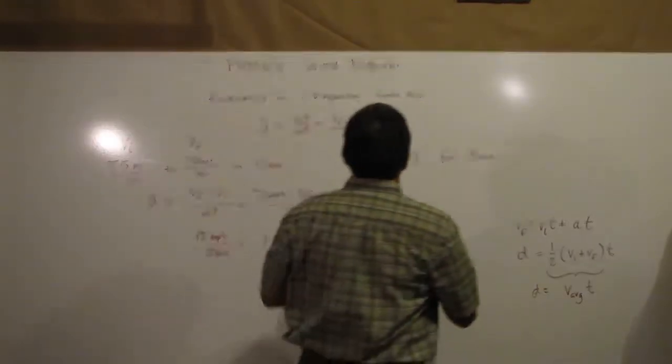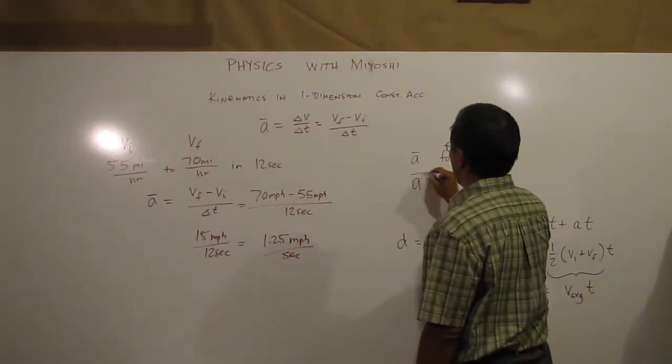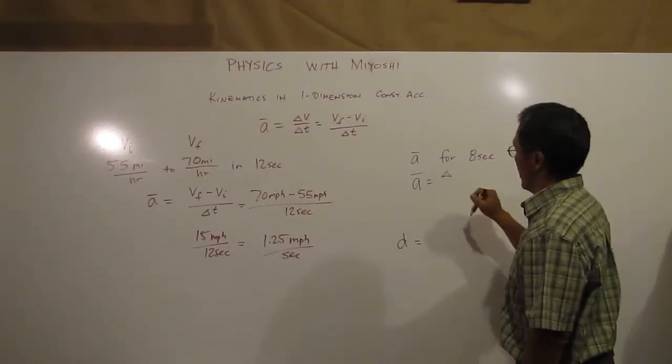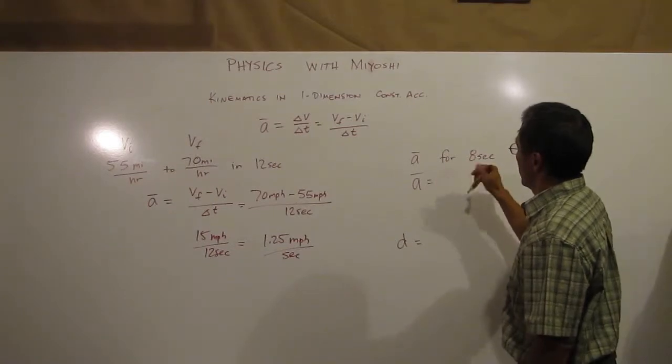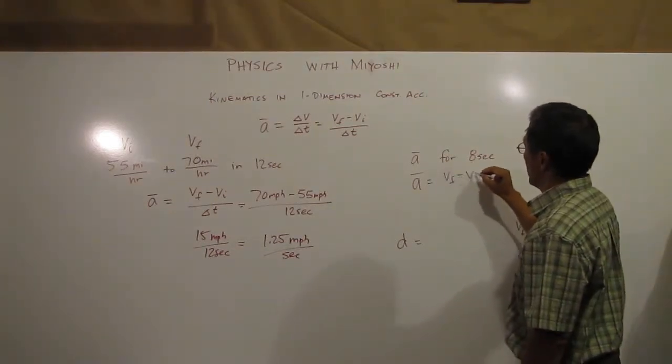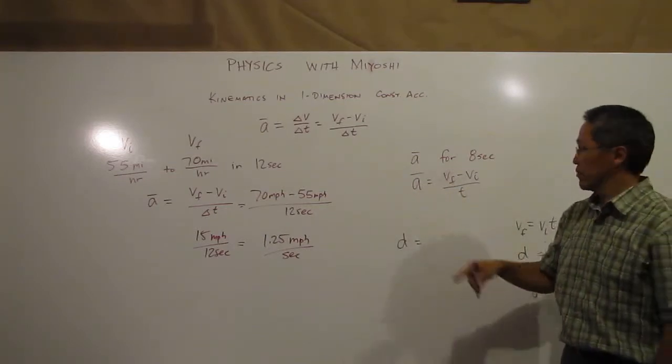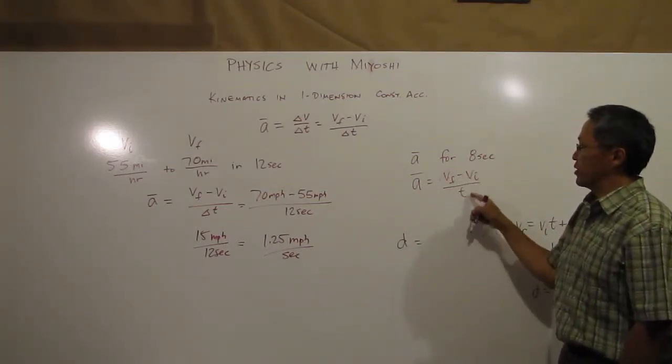So I have average acceleration is my change in velocity, well let's just do V final minus V initial divided by T. Well this time I know the acceleration, I know the initial velocity, and I know the time.